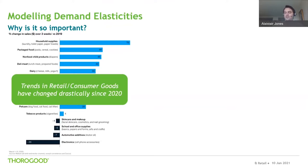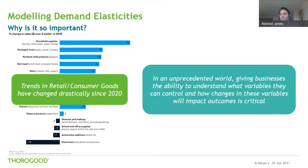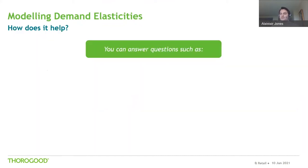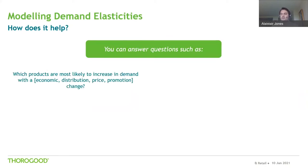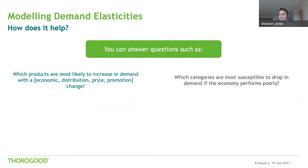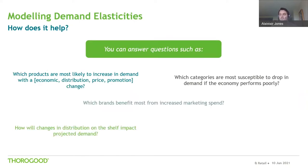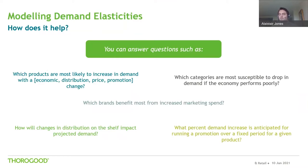Trends in retail and consumer goods demand have changed drastically since 2020, all over the world. In an unprecedented world, giving businesses the ability to understand what variables they can control and how changes in these variables will impact outcomes is critical. You can answer key questions like: what products are most likely to increase in demand with a variable change such as distribution or promotion? Which categories are most susceptible to a drop in demand if the economy isn't performing well? Which brands benefit the most from increased marketing spend? How will changes in distribution on the shelf impact demand? What percent demand increase is anticipated for running a promotion over a given time frame for a certain product?